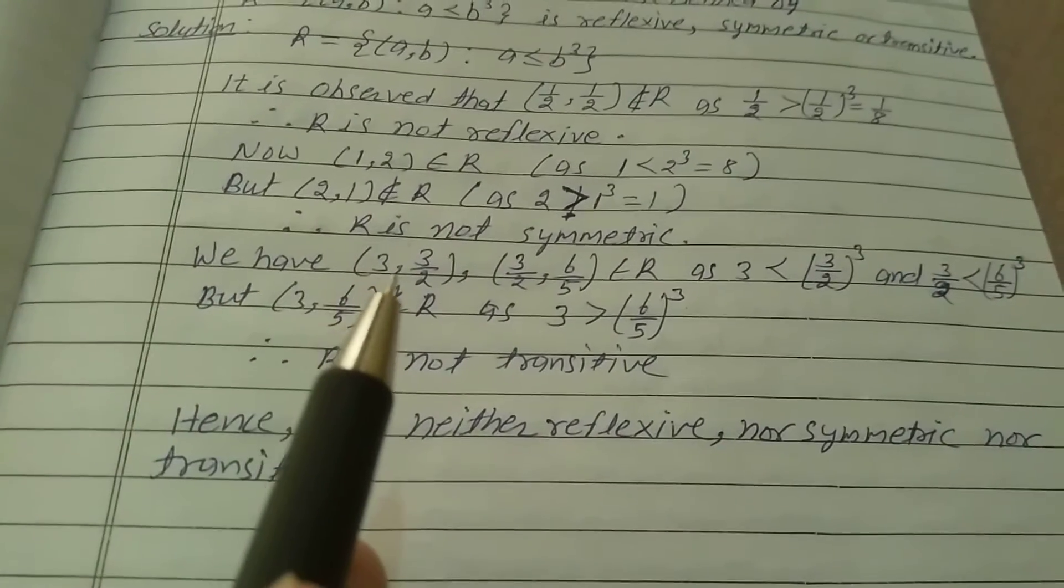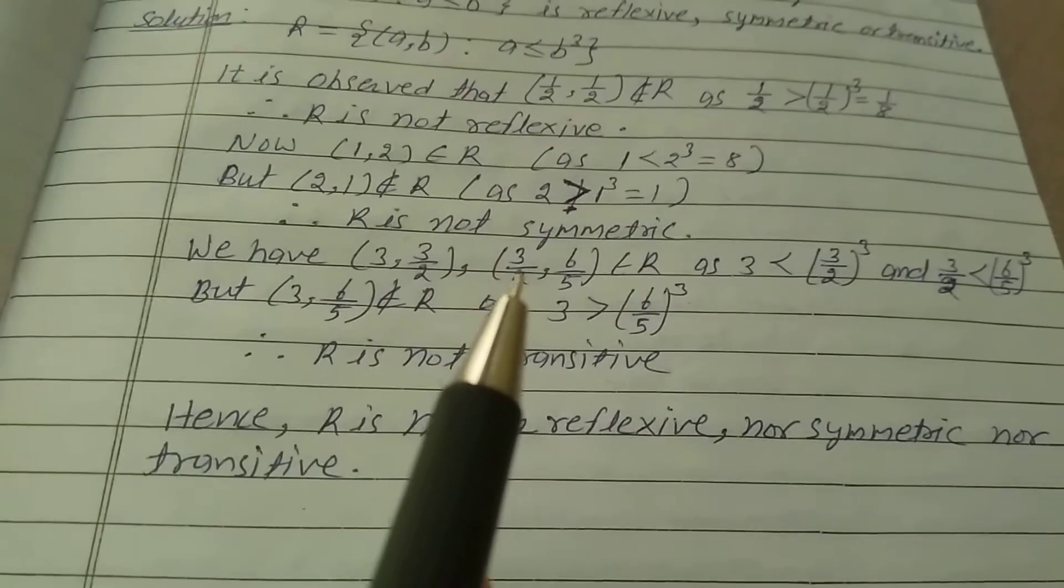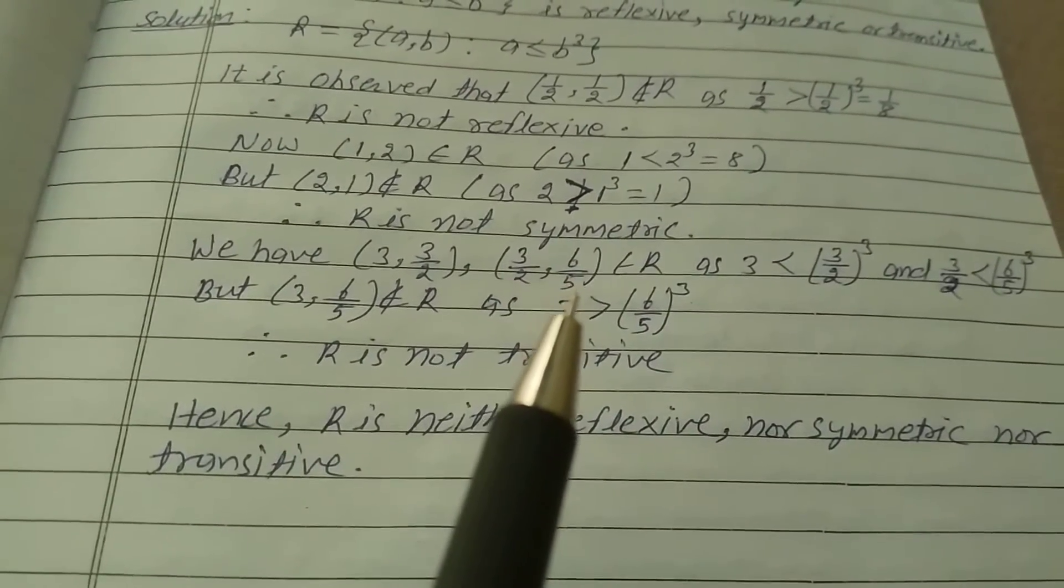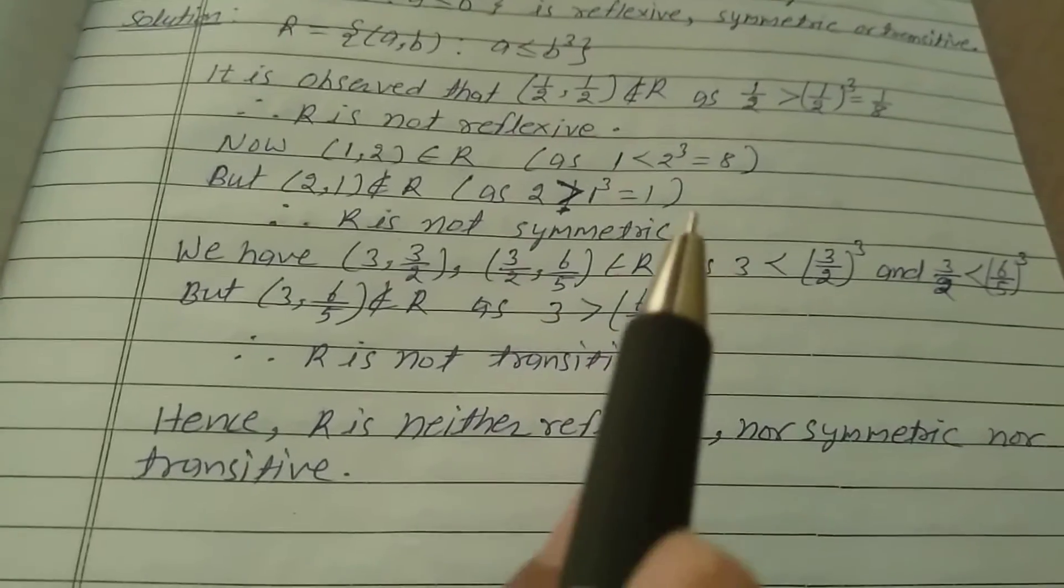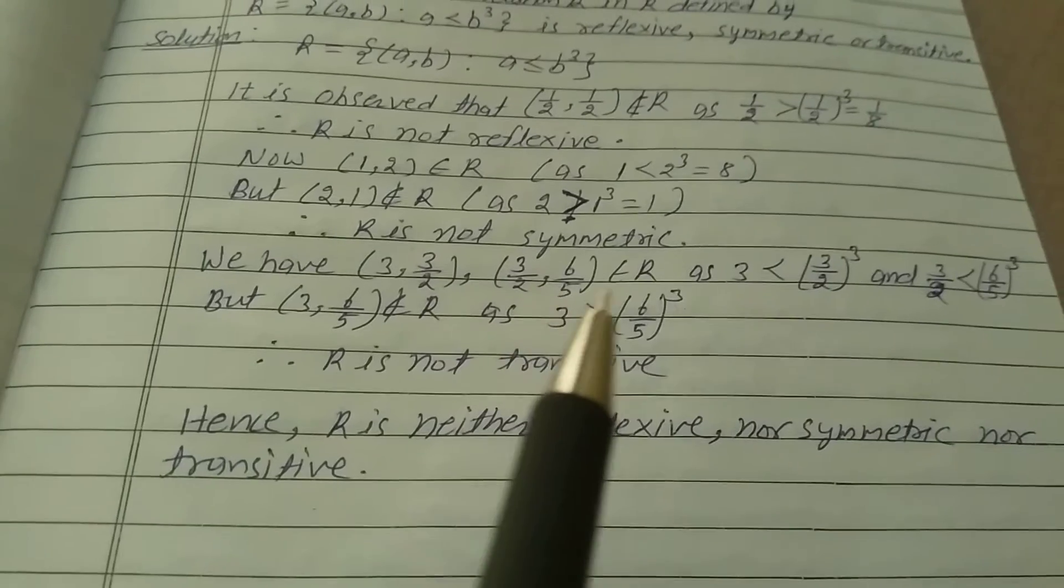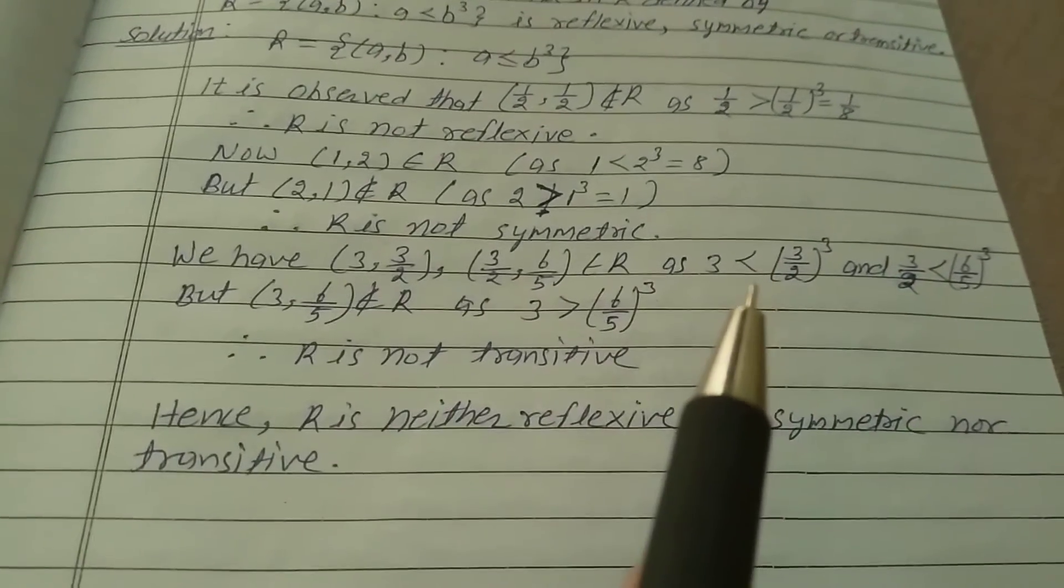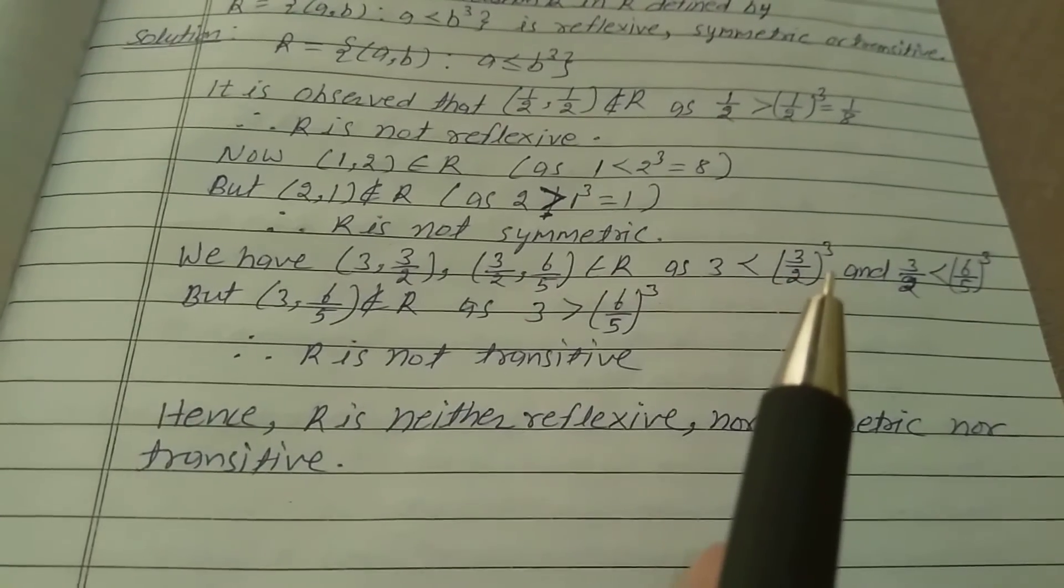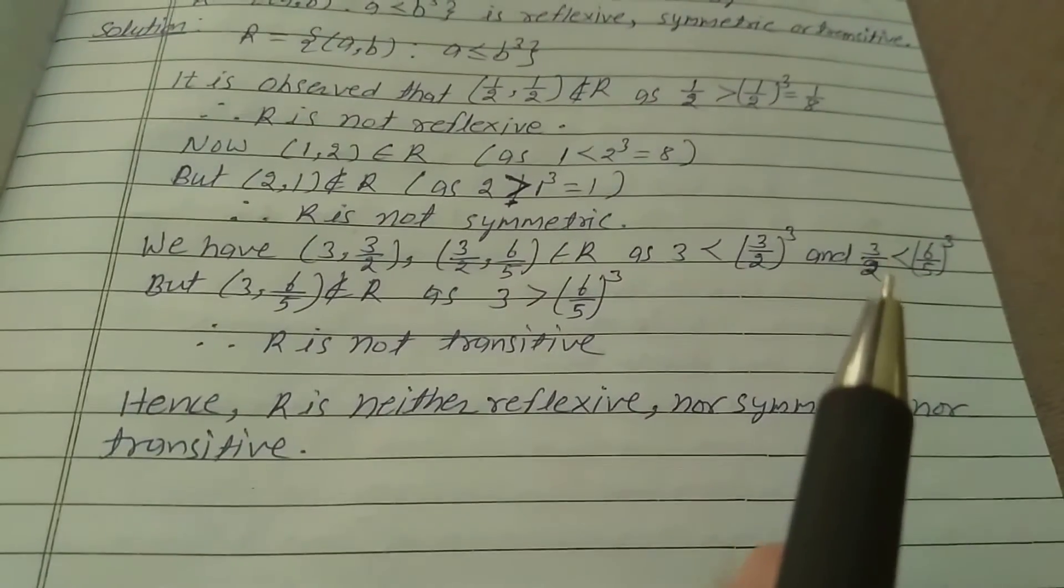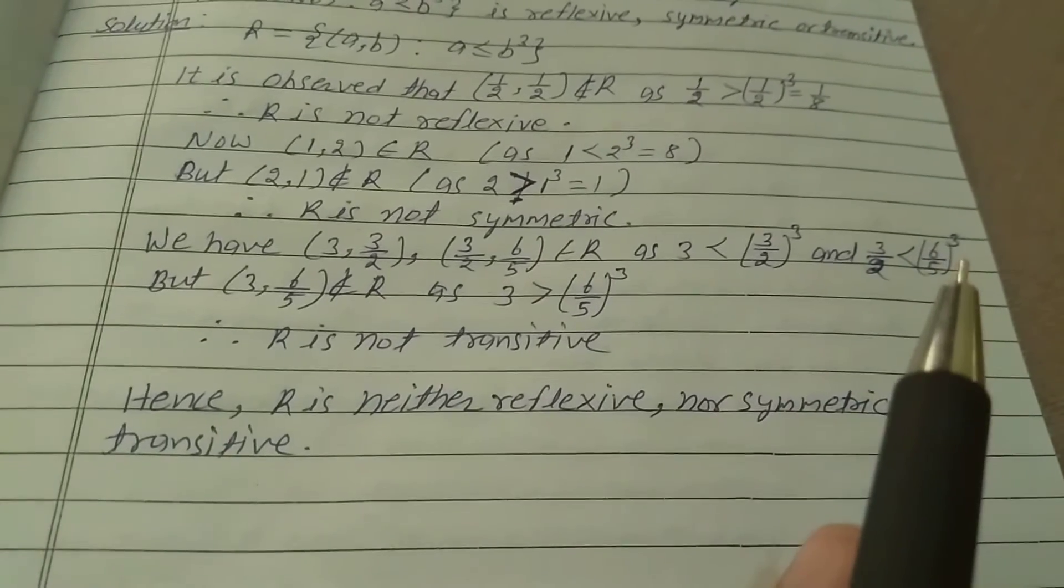We have (1, 3), (3/2, 3/2), (3/2, 6/5) belongs to R as the relations satisfy 3 is less than (3/2) cube, and 3/2 is less than (6/5) cube.